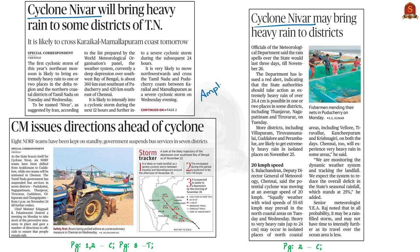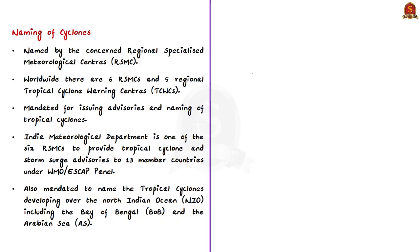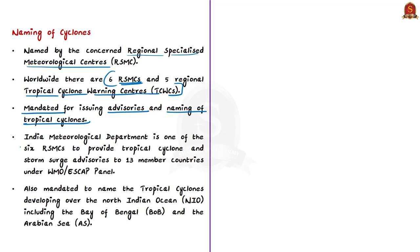Tropical cyclones forming over different ocean basins are named by the concerned Regional Specialized Meteorological Centers (RSMCs). Worldwide, there are six RSMCs and five Regional Tropical Cyclone Warning Centers (TCWCs), mandated for issuing advisories and naming tropical cyclones. The India Meteorological Department is one of the six RSMCs and provides tropical cyclone and storm surge advisories to 13 member countries under the WMO-ESCAP panel.